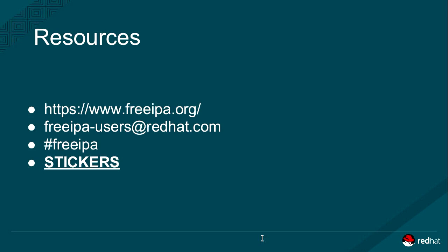Resources: freeipa.org is the main site. The users' mailing list is freeipa-users@redhat.com. FreeIPA is the channel on Freenode. I've got stickers but didn't bring them with me, so I'll put them down on the stickers table near the rego desk tomorrow. If you have questions or want to know more about FreeIPA, come see me any time — I'm here all week.